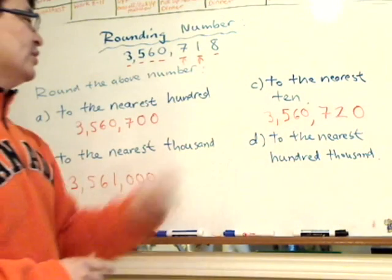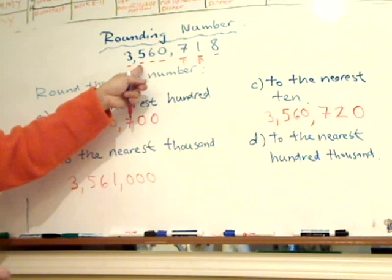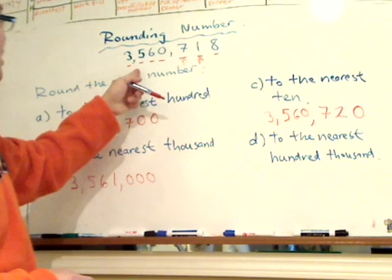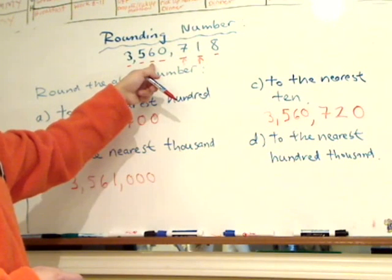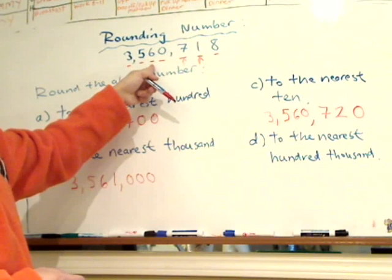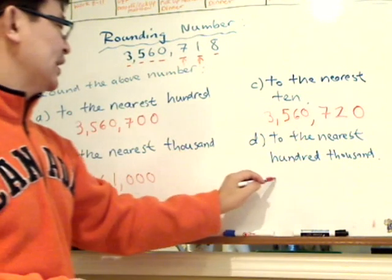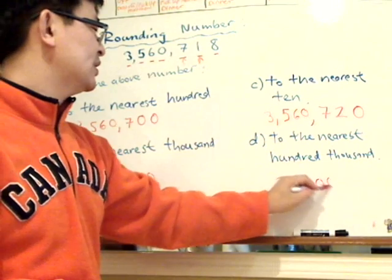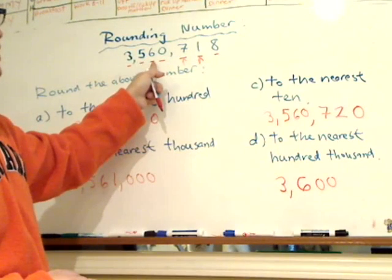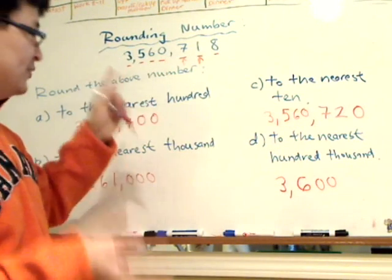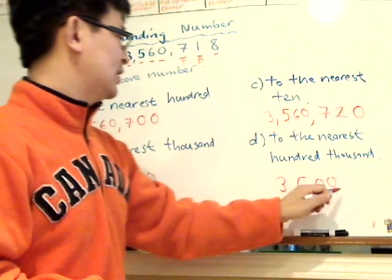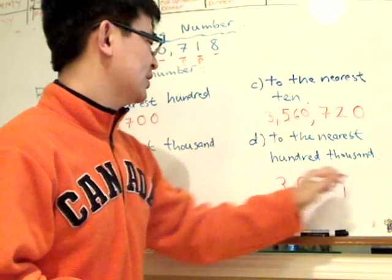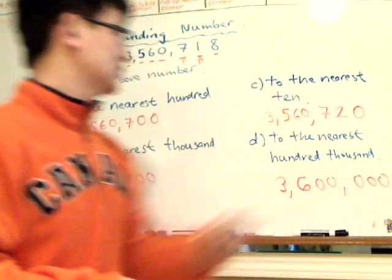Last question: to the nearest hundred thousand. The digit we're looking at is in the hundred thousands place — that's the five in five hundred and sixty thousand. We look at the number before it, which is sixty thousand. Since sixty thousand is greater than fifty thousand, it's five or greater, so we round up. The hundred thousands digit rounds up, giving us three million, six hundred thousand as the answer.